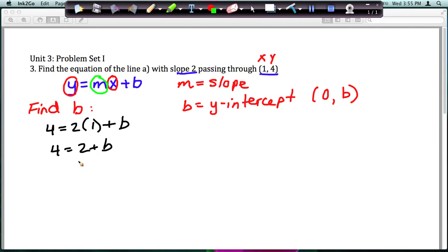And then to solve for b, we need to subtract this 2 from both sides of the equal sign. And we get, I'll just write it in the other order, b equals 4 minus 2 is 2. So that's our y-intercept.